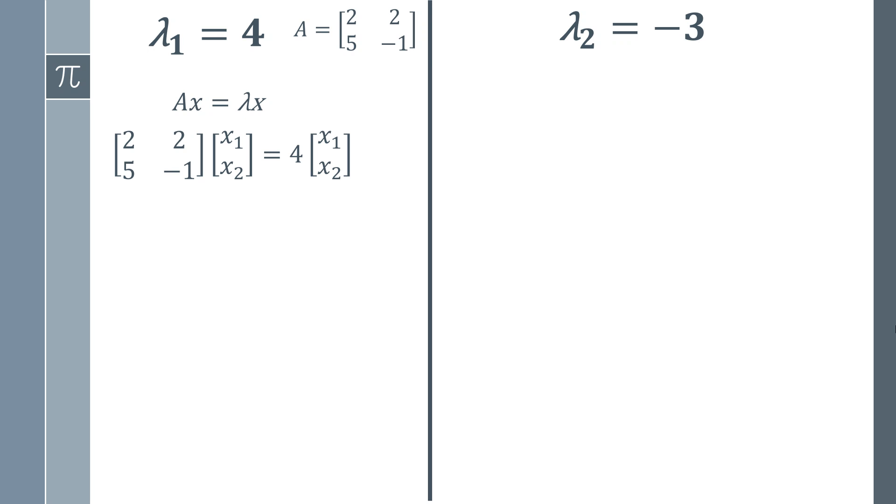We can do matrix multiplication and multiply all this out. So we've got 2 times x₁ plus 2 times x₂, that's going to be equal to 4x₁. There's one equation. We could work out a second equation for completeness and that's what we get if we multiply it out.